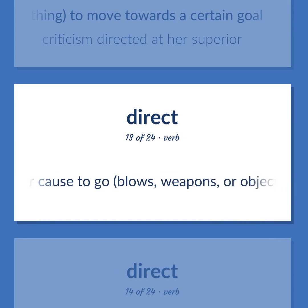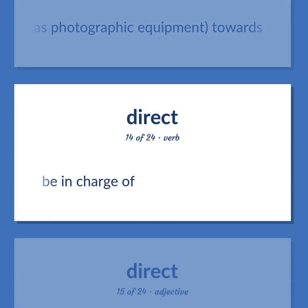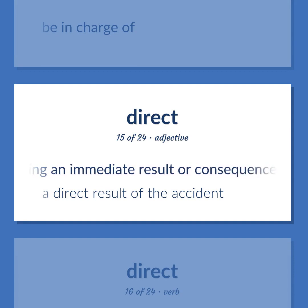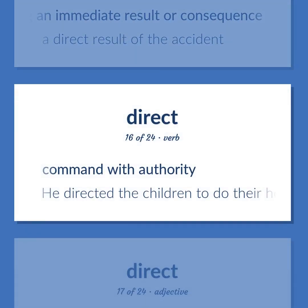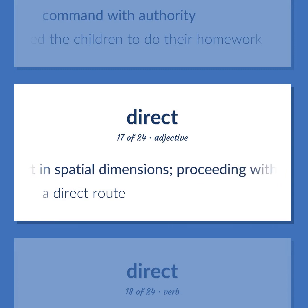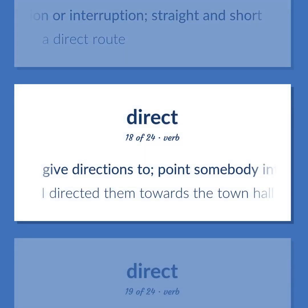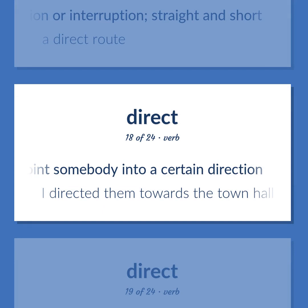Point or cause to go — blows, weapons, or objects such as photographic equipment — towards. Be in charge of. Being an immediate result or consequence. A direct result of the accident. Command with authority. He directed the children to do their homework. Direct and spatial dimensions; proceeding without deviation or interruption; straight and short. A direct route. Give directions to; point somebody into a certain direction. I directed them towards the town hall.